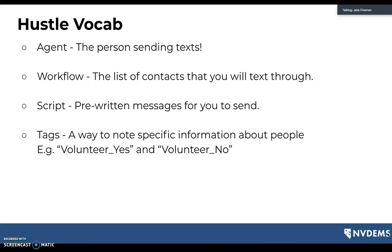Now let's cover some Hustle vocabulary so we're all on the same page. An agent is the person sending texts — that's you and me. A workflow is a list of contacts you'll text through; when you sit down to use Hustle, you'll have a big pre-planned list of people to reach out to. A script is a pre-written message you send to start all your conversations. And a tag is a way to note specific information about people, such as volunteer yes or volunteer no — we'll talk more about that as we move through the presentation.